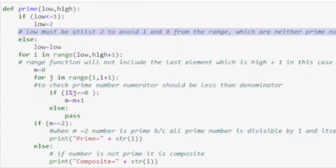If low is less than or equals to 1, we have to set low equals to 2 in order to avoid 1 and 0 from the range, which are neither prime nor composite. Else, we can pass or set low as it is.